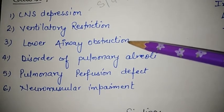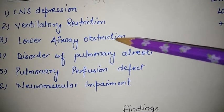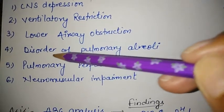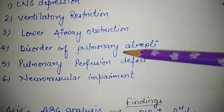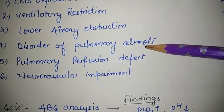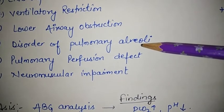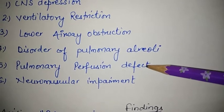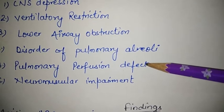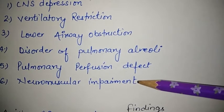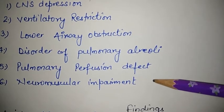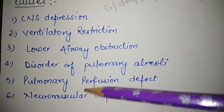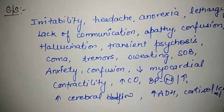Fourth is disorder of the pulmonary alveoli, which includes acute respiratory distress syndrome (ARDS), severe bilateral pneumonia, and lower airway obstruction such as emphysema. Fifth is pulmonary perfusion defect, which includes cardiac arrest and circulatory failure. Sixth is neuromuscular impairment, which includes spinal cord injury, myasthenia gravis, and Guillain-Barré syndrome (GBS). These are the main causes of respiratory acidosis.